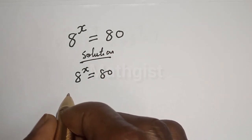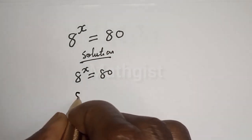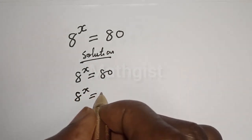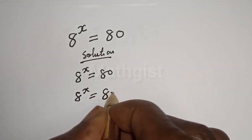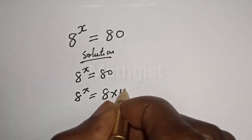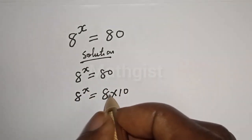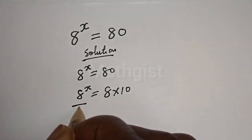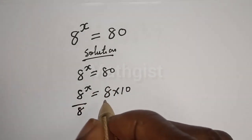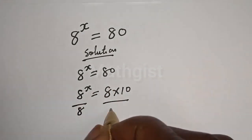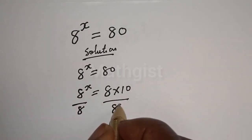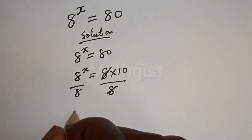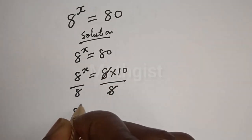8 raised to the power s equals 80 can be rewritten as 8 multiplied by 10. Let's divide both sides by 8. Dividing both sides by 8 will cancel the 8 on the left side.